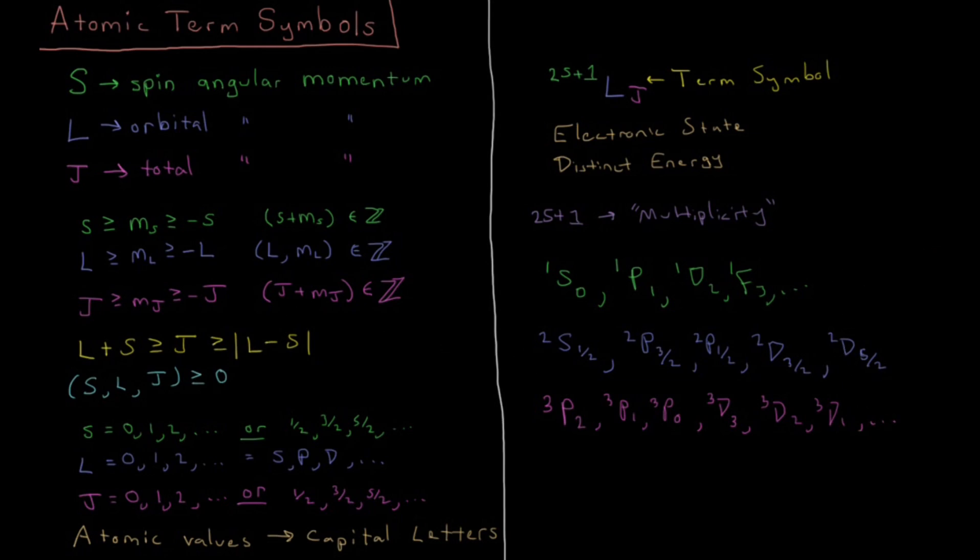Then once you get into quartets, you start getting a lot of things. You can have things like quartet p. We can have quartet p, 5 halves, quartet p, 3 halves, quartet p, 1 half. And then you might think we could have quartet p, minus 1 half, but like you see, you have an absolute value sign here. So you can't go below 0 for j, so only three values of j there for a quartet p.